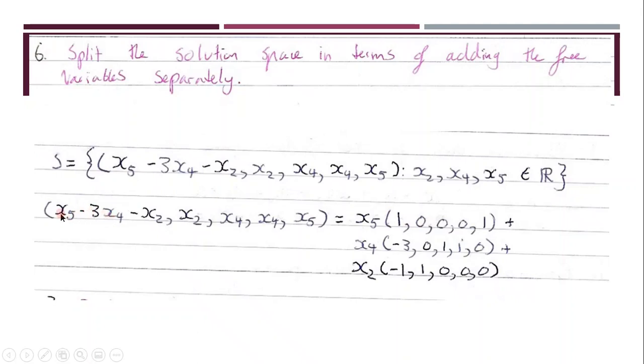So as you can see here, there is only one x5 in the first coordinate, so you put in one. And then there's no x5 in the second coordinate, the third, or the fourth. But there is an x5 in the last coordinate, so you put a one there. And you continue this for all of your free variables.